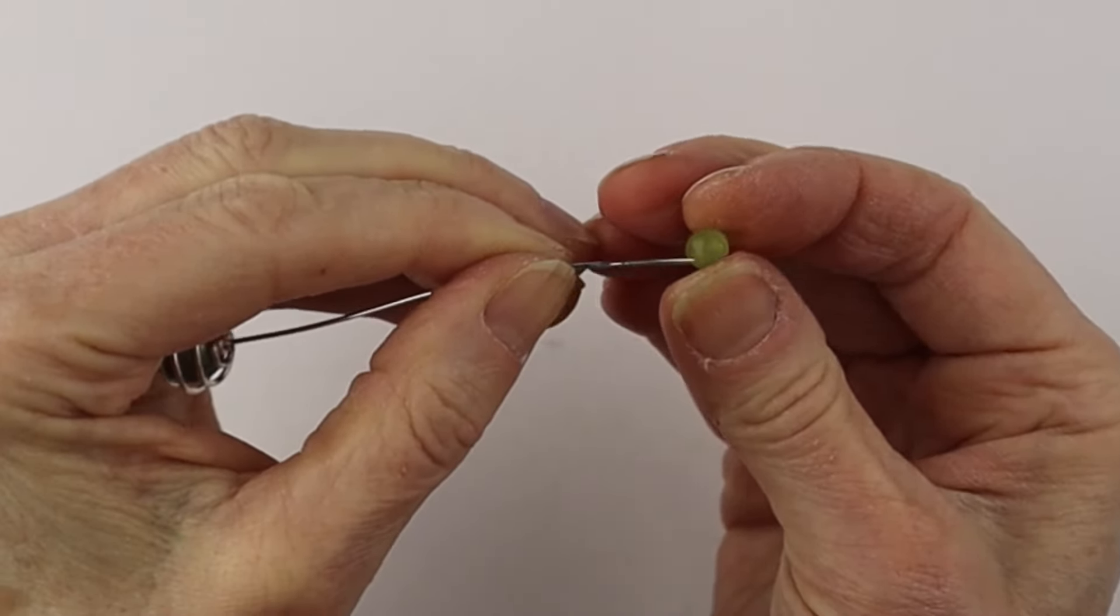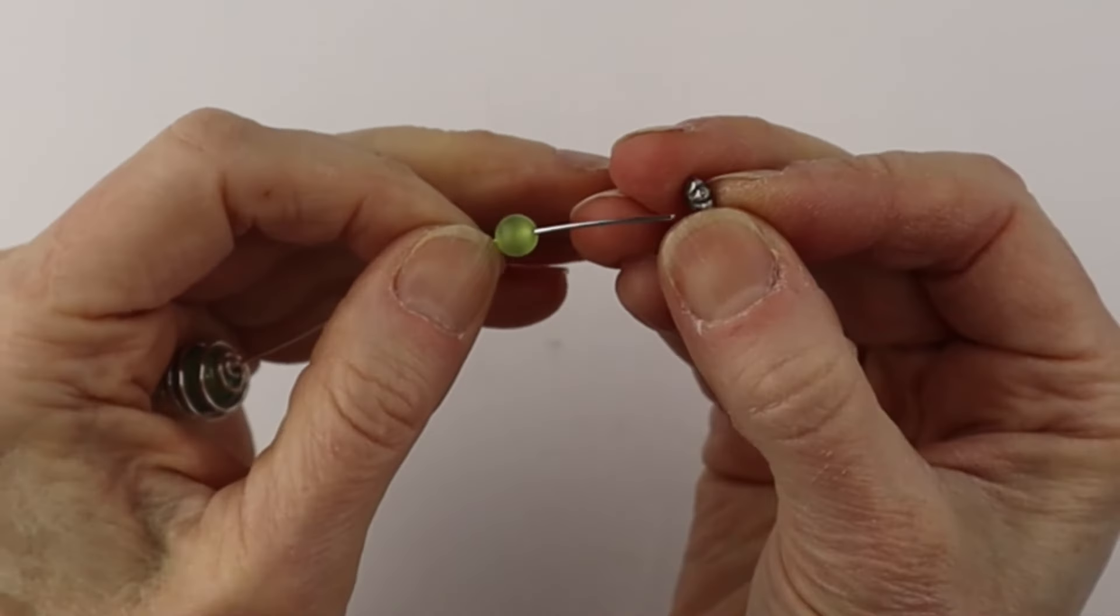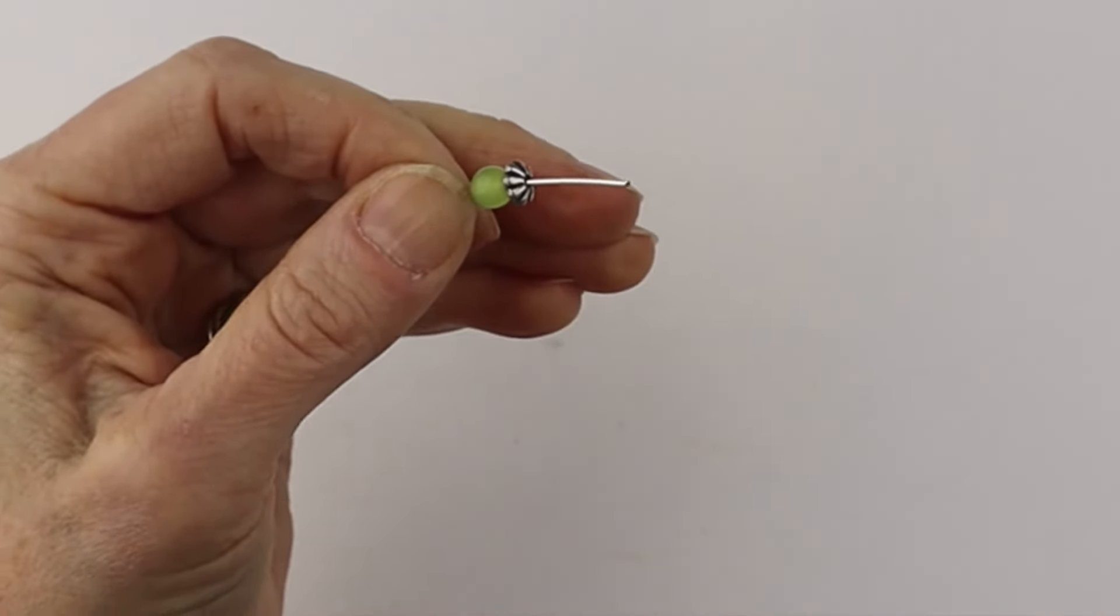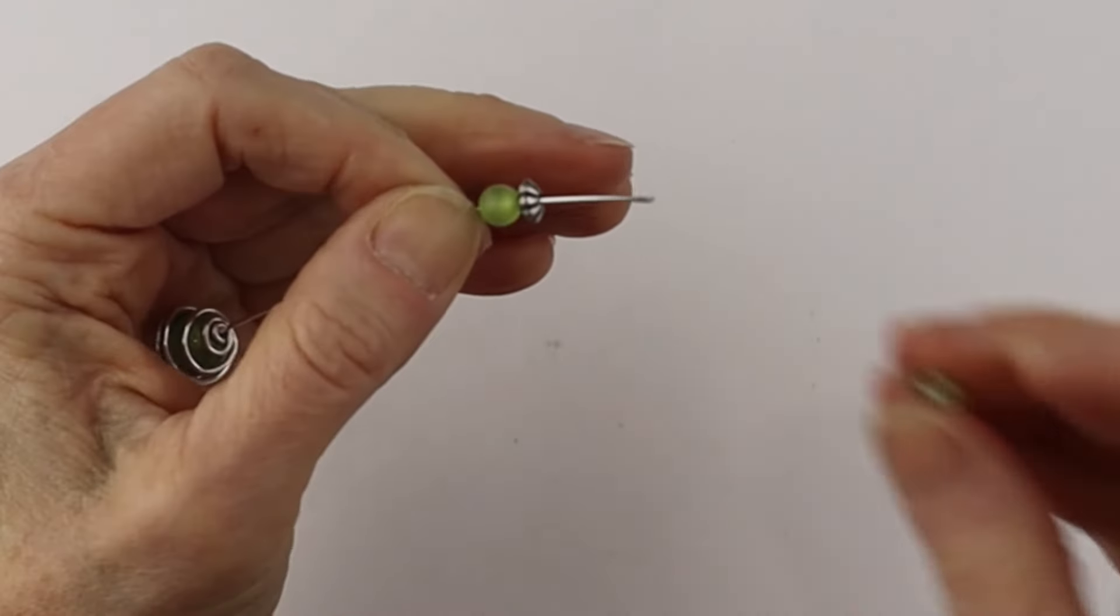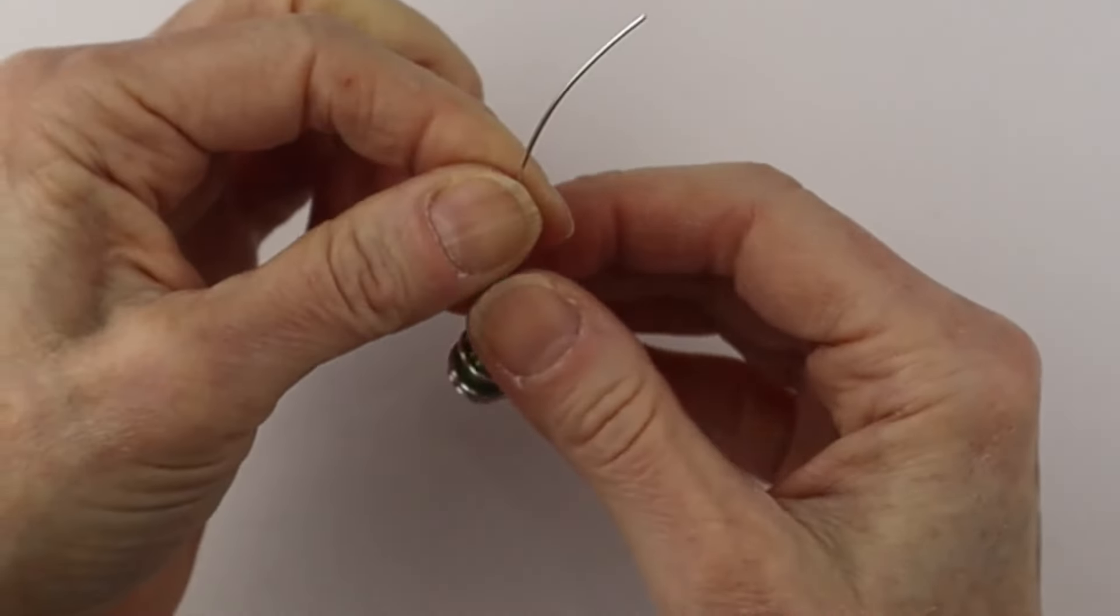Then we're going to add beads. I have a 6 millimeter cat's eye bead, a metal spacer bead, and a little glass faceted bead.